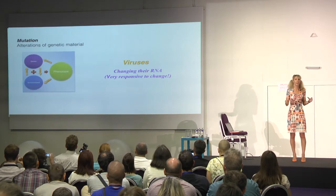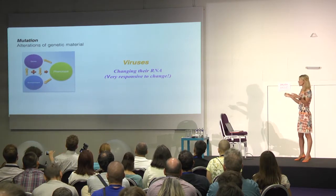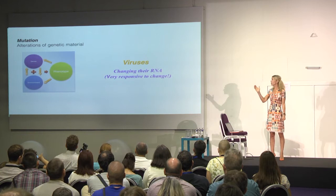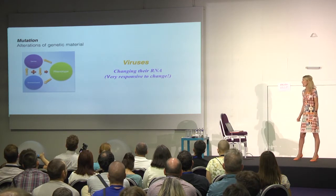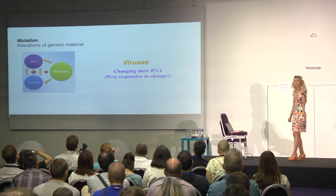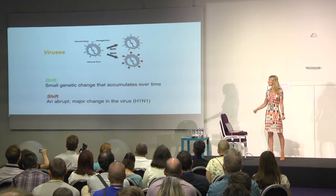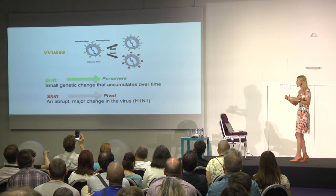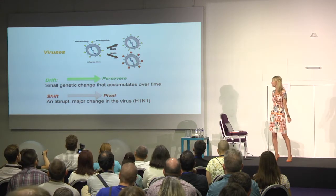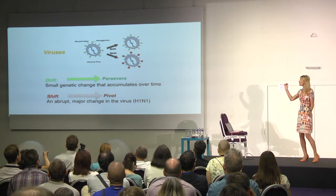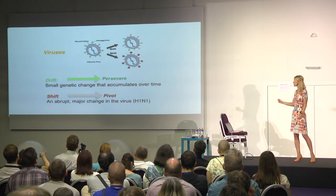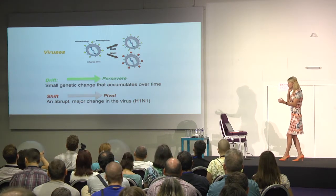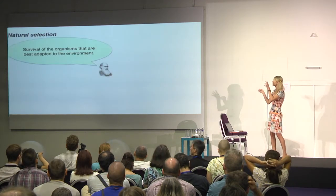Gene mutation and environment have a huge influence on genotype. The same genotype can end up resulting in a different phenotype in different environments. Viruses are a very good example — they are changing their RNA all the time, very responsive to changes. The influenza virus can mutate in two different ways: drift, a small genetic change that accumulates over time; and shift, an abrupt major change when they change completely all proteins. In lean startup language, drift — small changes propagated over time — is persevere. Shift is a pivot, where you make a major change in a completely different direction.